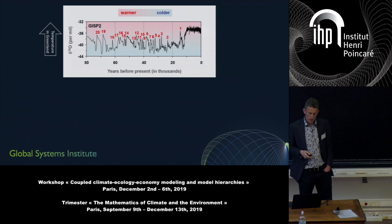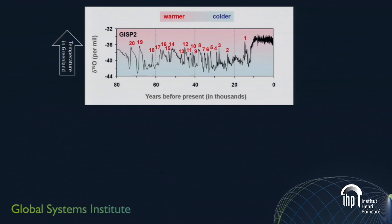Even when we look within ice ages, we see the climate is unusually unstable. We see multiple abrupt warming events — they're called Dansgaard-Oeschger events in our language. They correspond sometimes to around 8 degrees centigrade of warming, as recorded in Greenland, within less than a decade. It's kind of important to know that the climate can behave in quite a volatile manner.